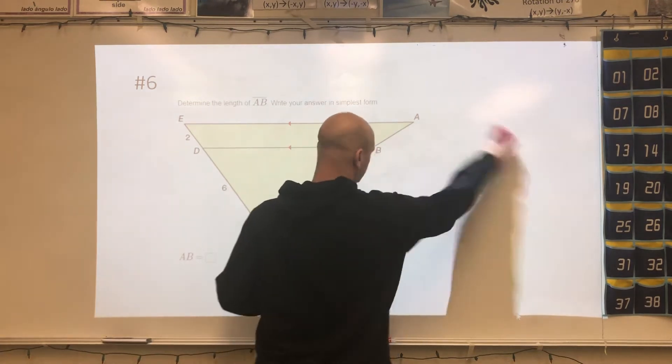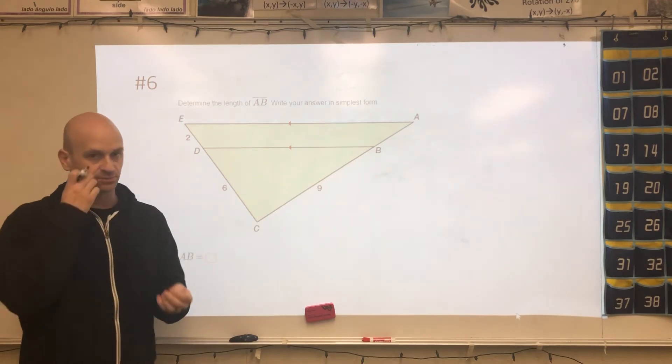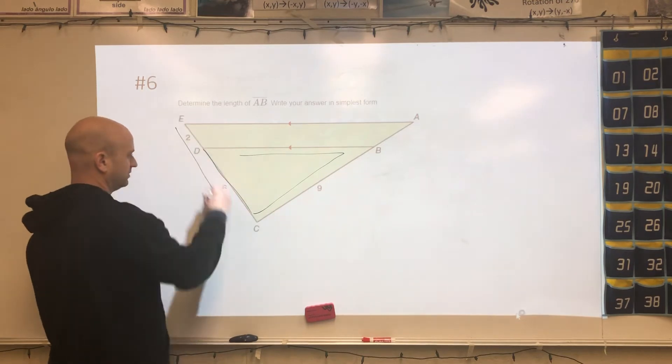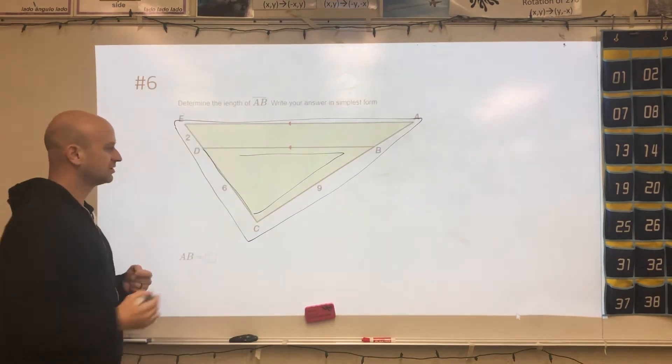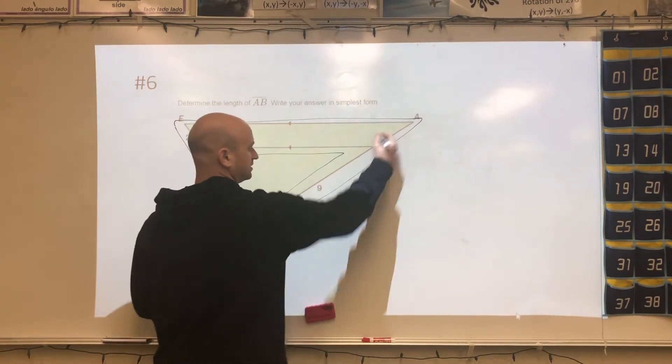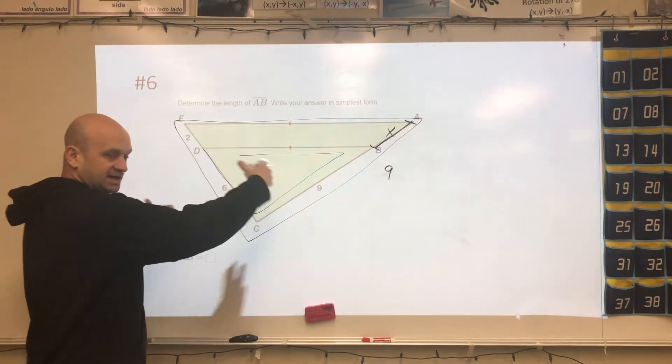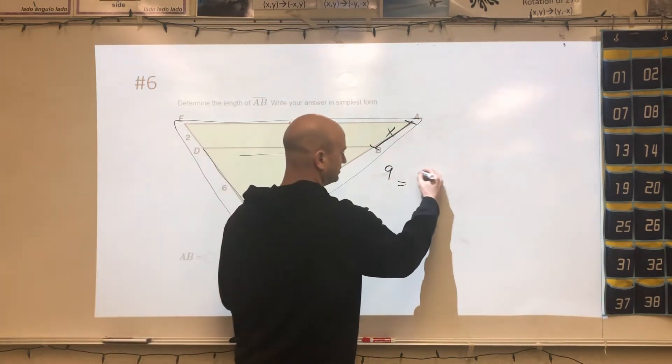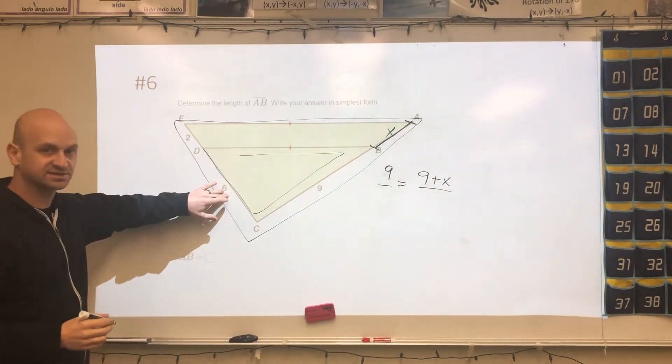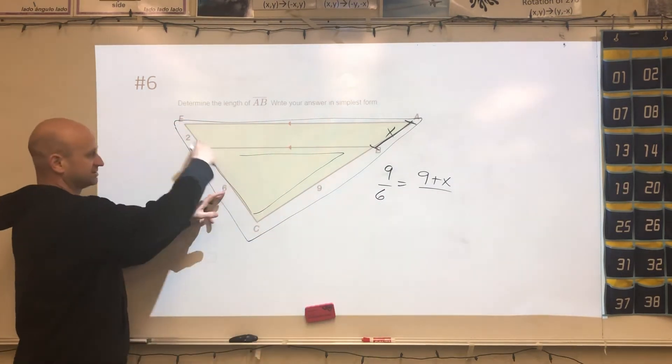All right, next one. There's a couple ways to do this, but the way we explained it in class is there's two triangles. This is what I refer to as the nesting doll. We have the smaller triangle, and then we have the larger triangle. So in the smaller triangle, this length is 9. This length here is X. So the 9 is going to be proportional to 9 plus X. And then on the left, I have 6, and that's going to partner up with 8. How do I get 8? It's 6 plus 2.